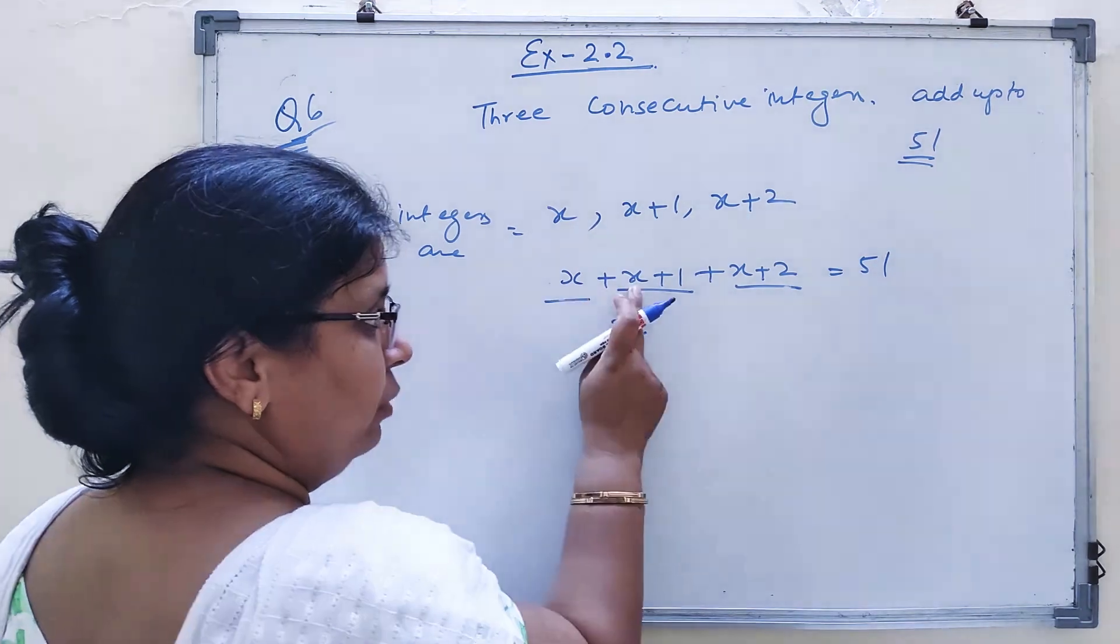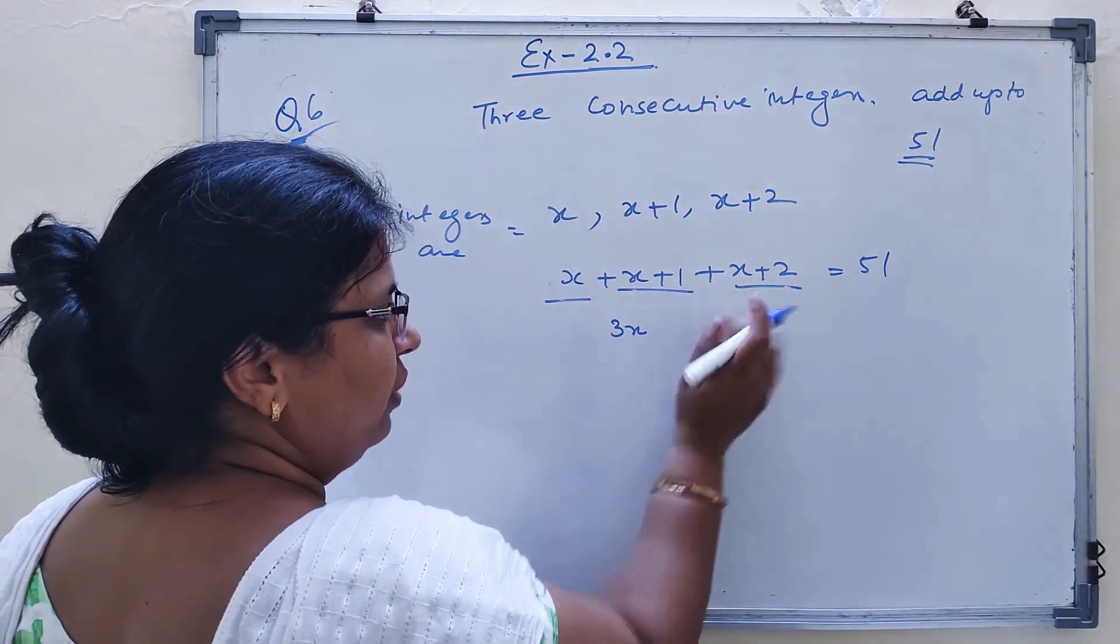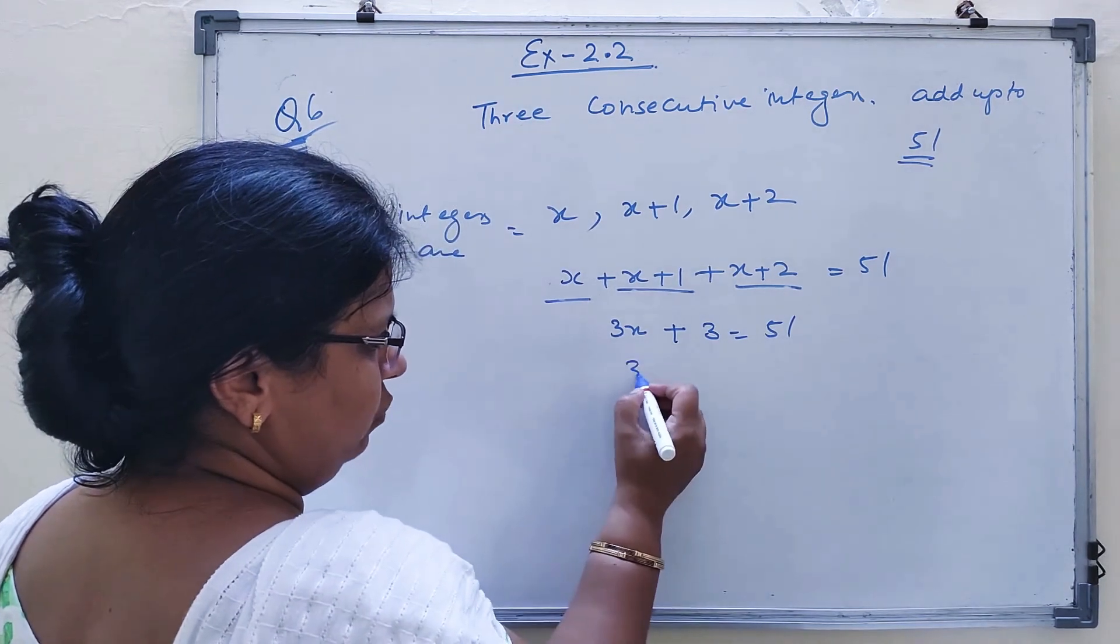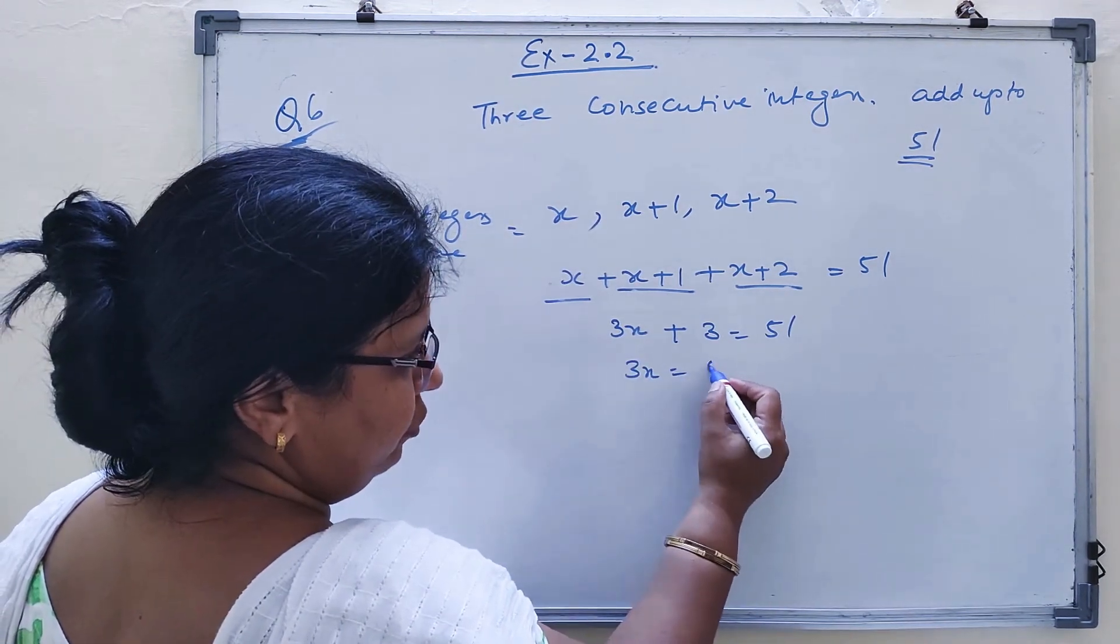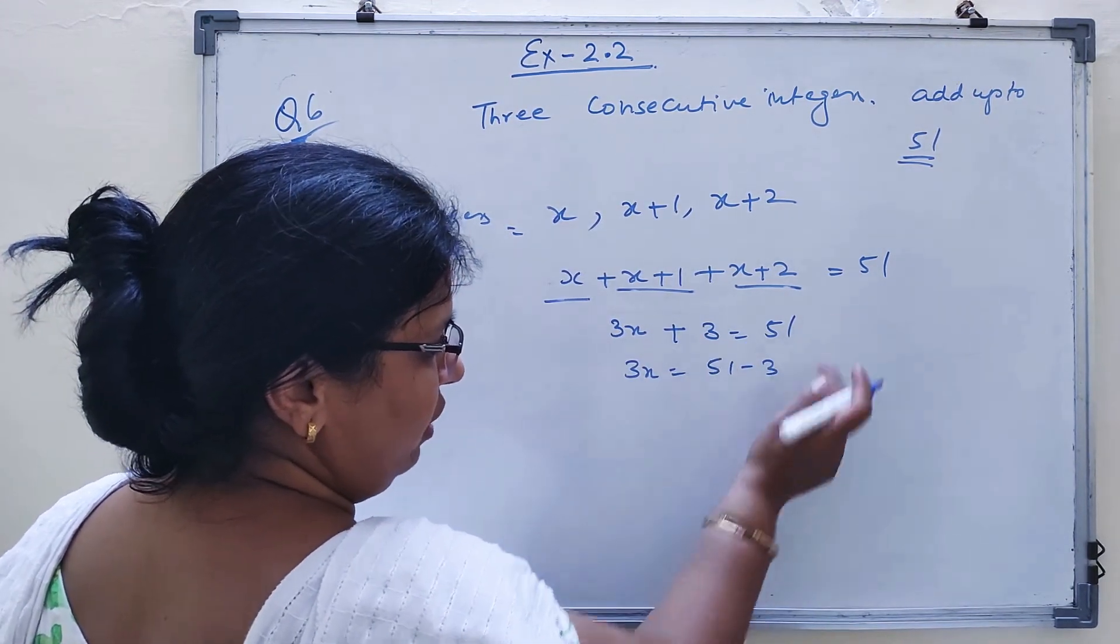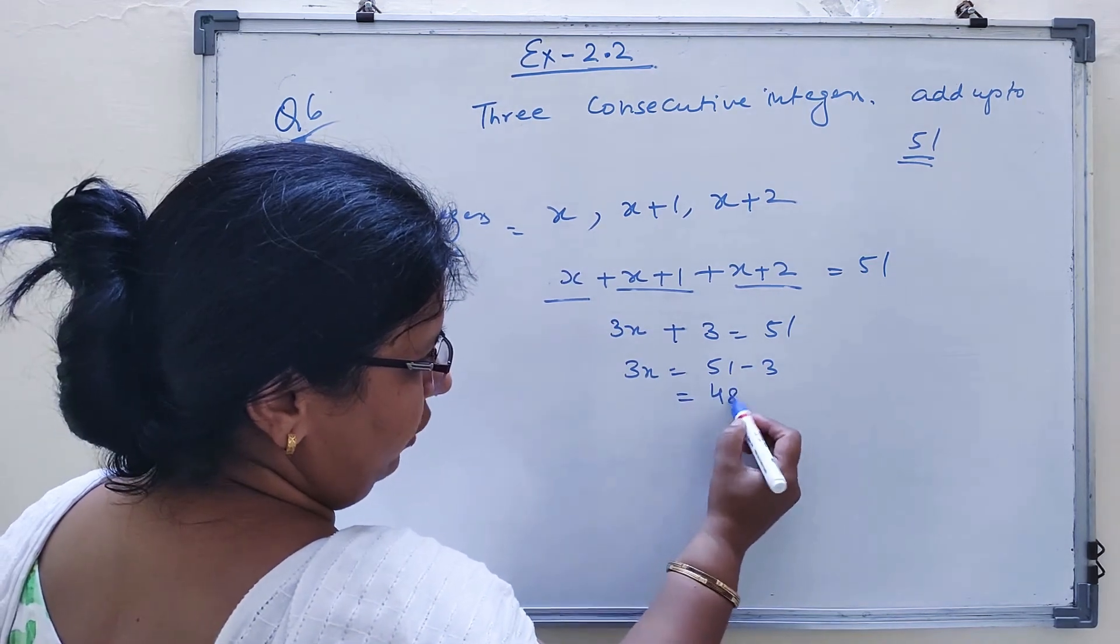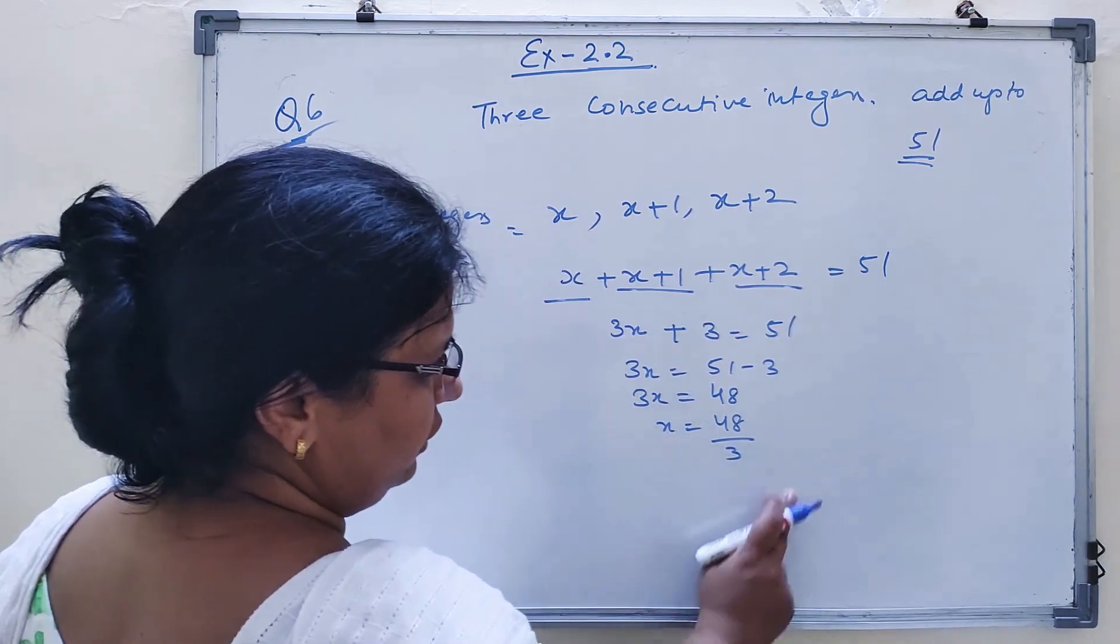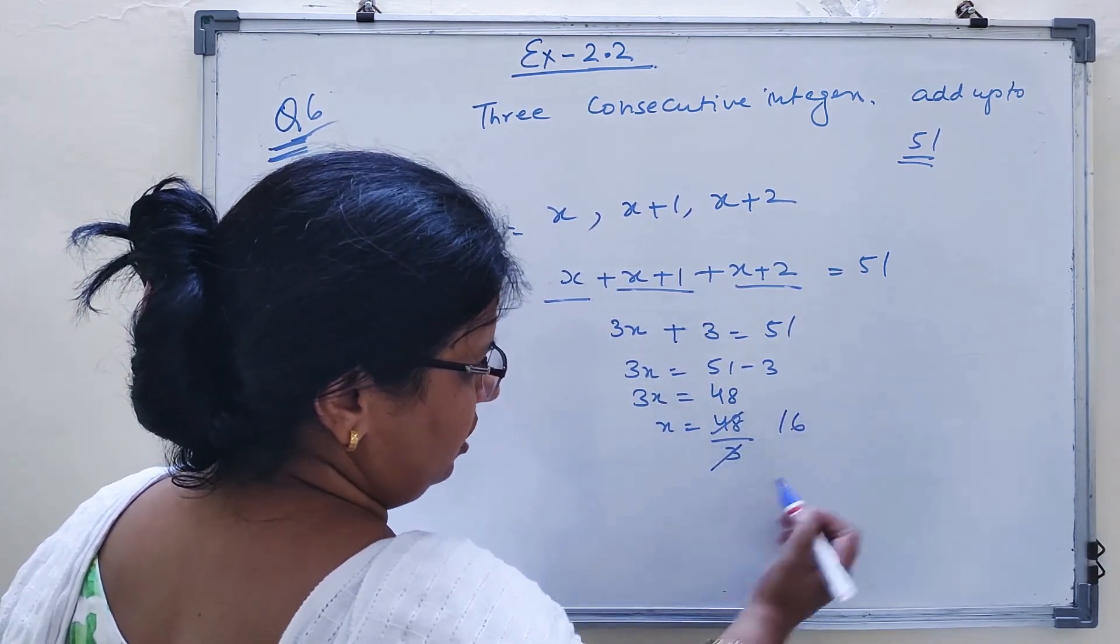Add number to number, variable to variable. 1 plus 2 is 3, so 3x plus 3 equal to 51. Transpose 3: 51 minus 3 is 48. So x is equal to 48 divided by 3, which is 16.